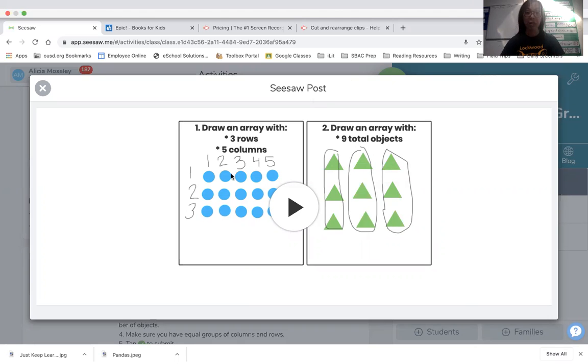So when you're taking a look at your work and it tells you you have three rows, remember the rows are going to go across. So here's row number one, row number two, row number three, and columns go up and down. So I have column one, column two, column three, column four, and column five.